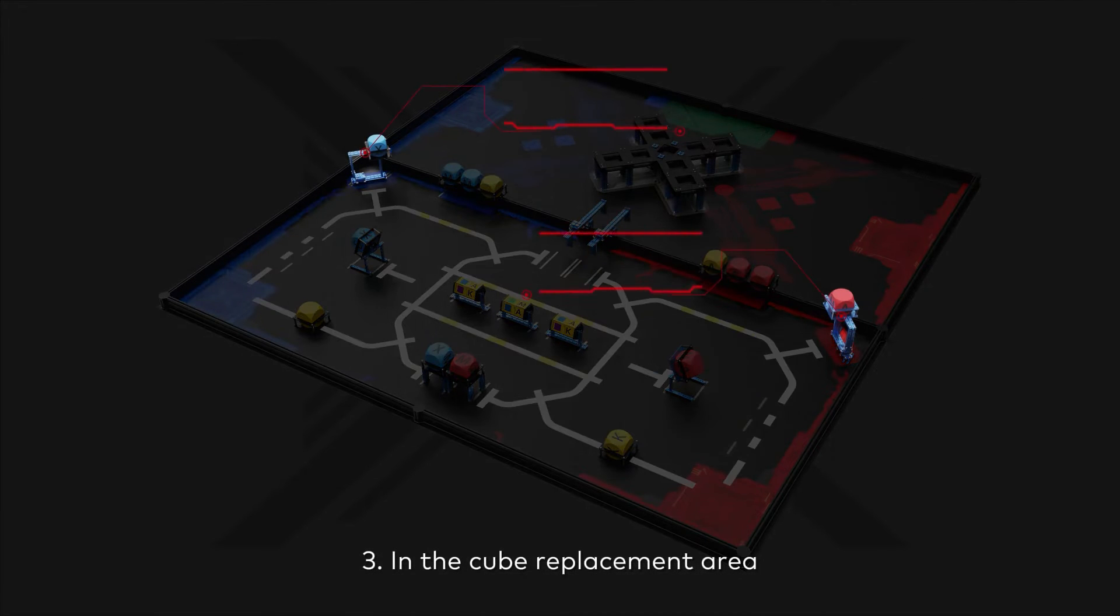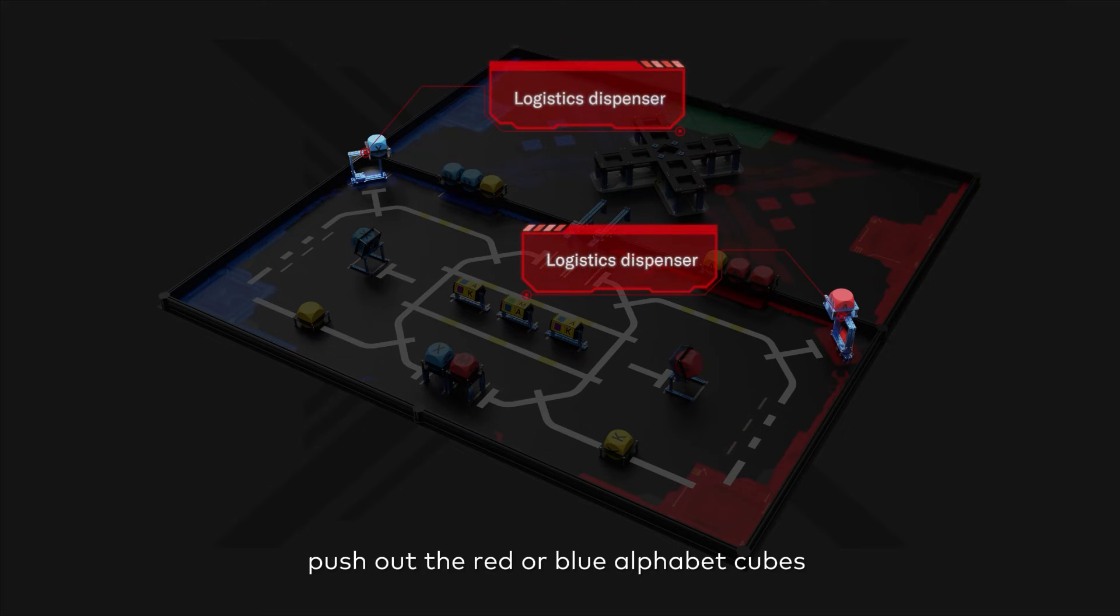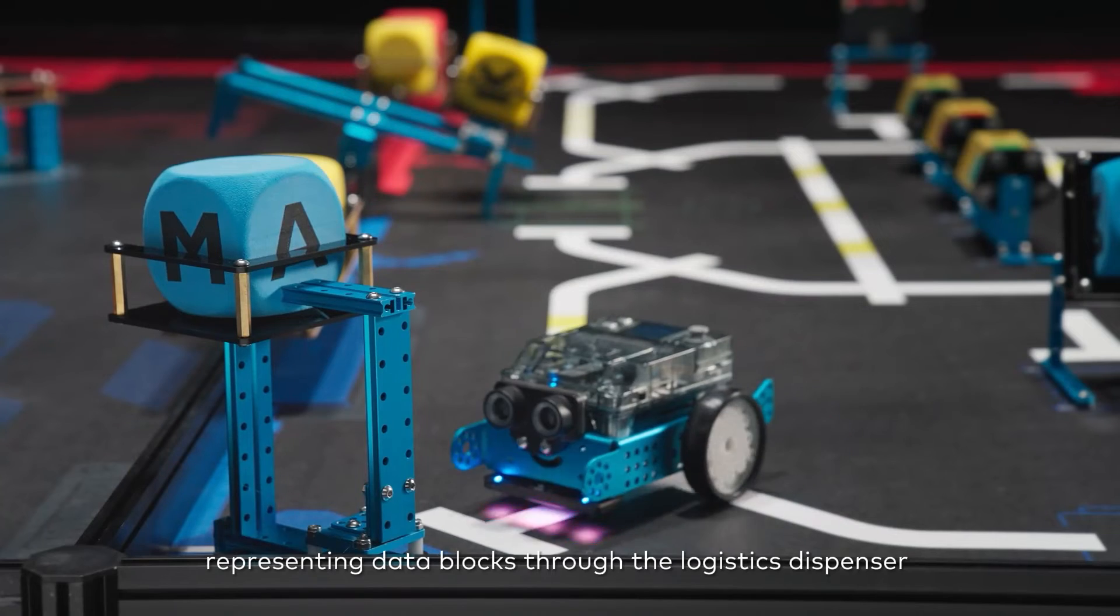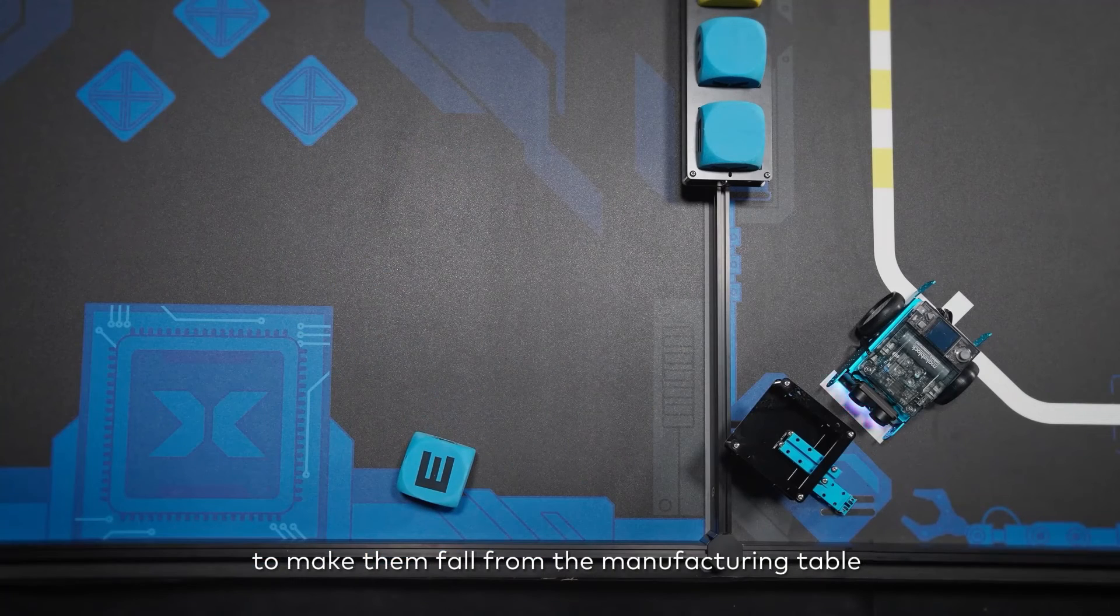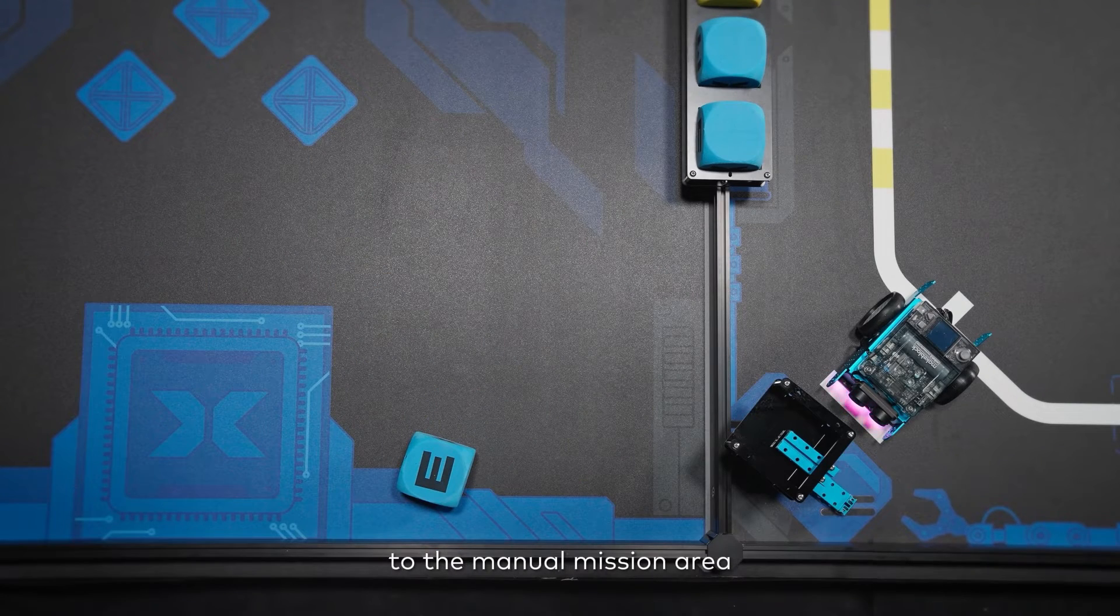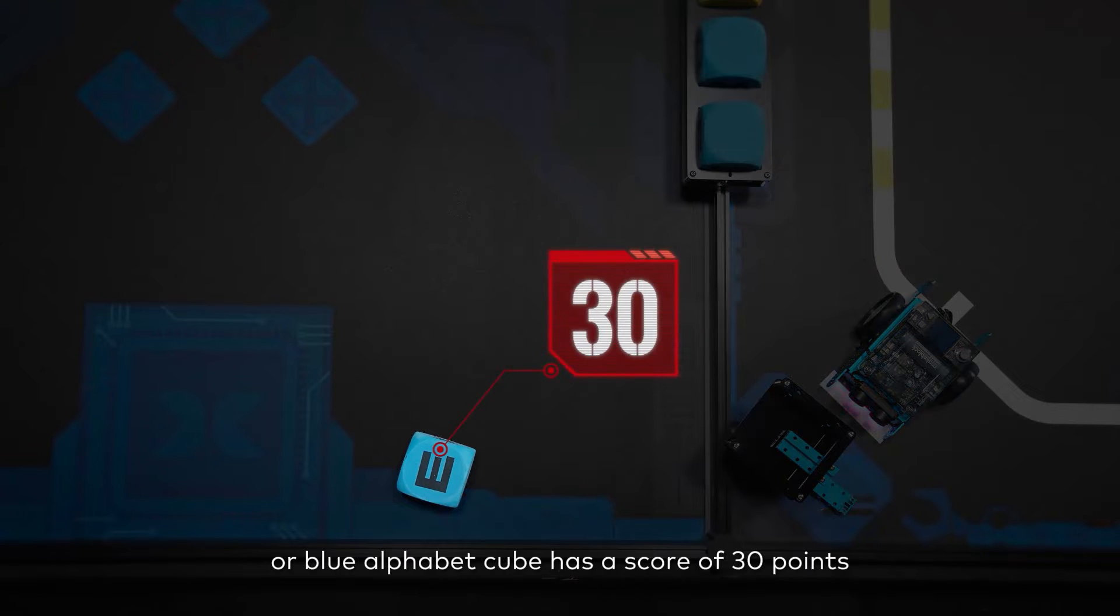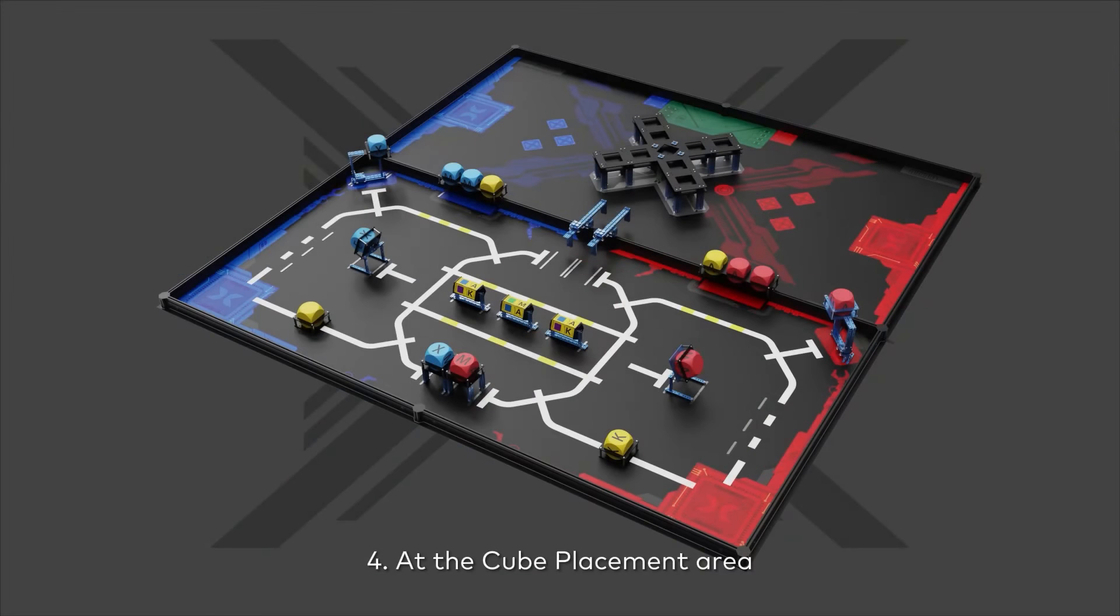In the cube replacement area, push out the red or blue alphabet cubes representing data blocks through the logistics dispenser to make them fall from the manufacturing table to the manual mission area, where each red or blue alphabet cube has a score of 30 points.